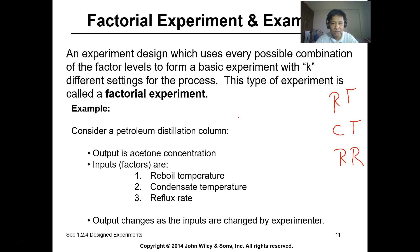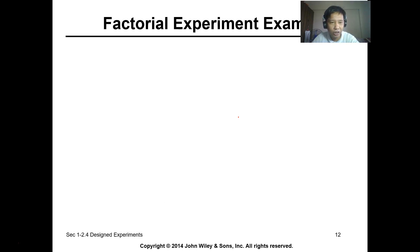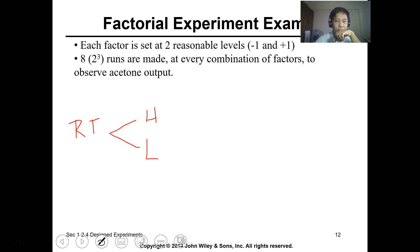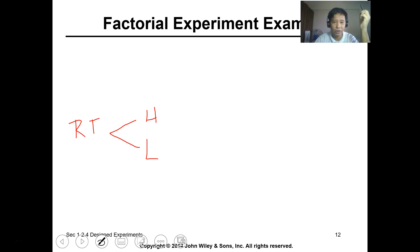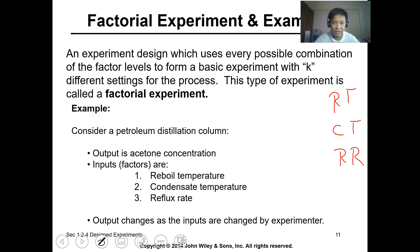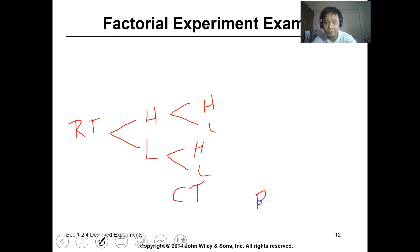For these three factors — reboiler temperature, condenser temperature, and reflux rate — we have two levels for each factor: high and low. So the reboiler temperature has a high and low level, the condenser temperature also has high and low, and the reflux rate likewise has high and low.